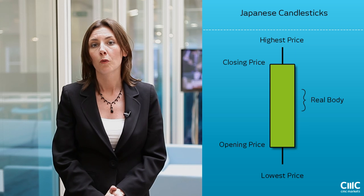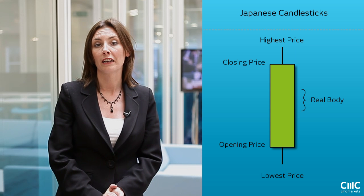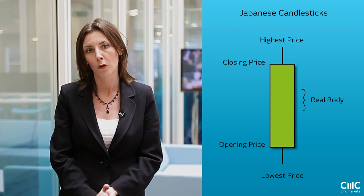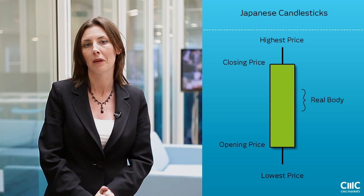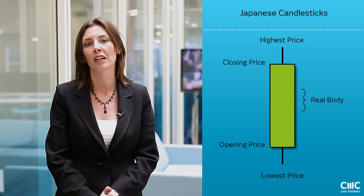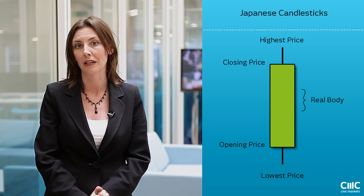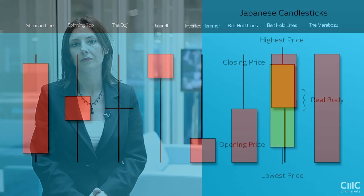The real body, where most of the trading action takes place, is often known as the true value. The single most important bit of information is the closing price because that will often indicate where the next price will be for the stock or index. Generally speaking, the longer the body is the more intense the buying or selling pressure, and conversely short candlesticks would indicate little price movement and could represent consolidation.